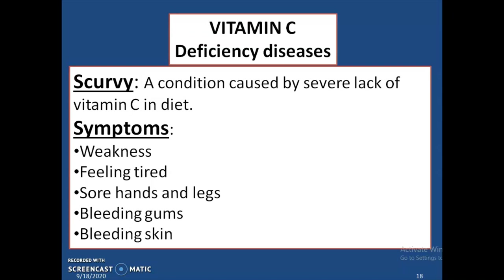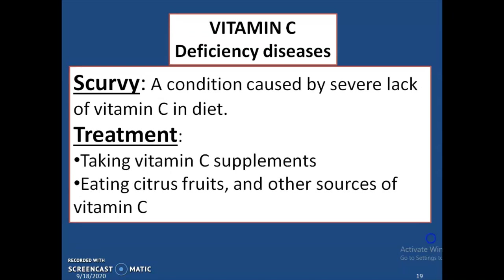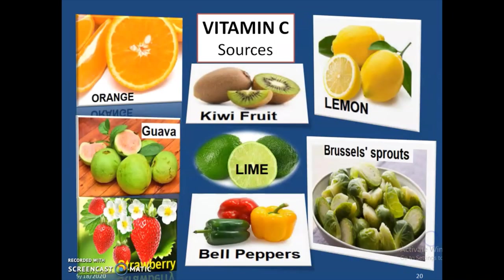Symptoms of scurvy include weakness, feeling tired, sore hands and legs, bleeding gums, and bleeding skin. It can be treated by taking vitamin C supplements and eating citrus fruits and other sources of vitamin C. Sources of vitamin C include orange, guava, strawberry, kiwi fruit, lime, bell peppers, lemon, and Brussels sprouts.